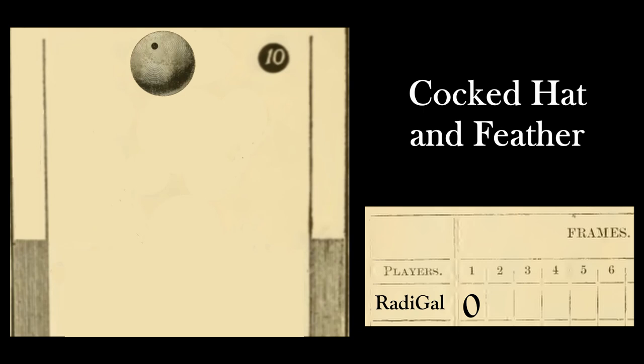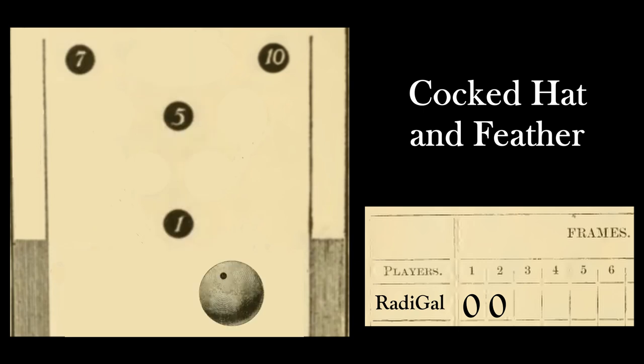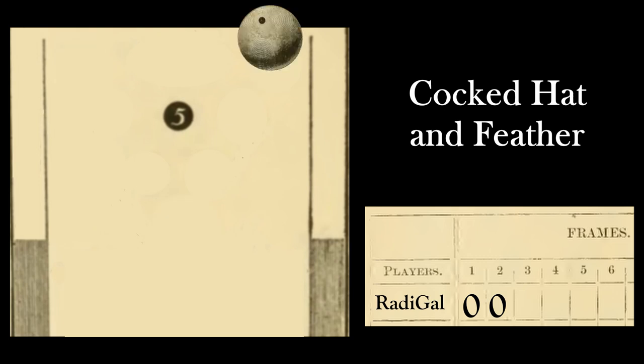I get up in the second frame and end up accidentally taking out the 5 pin. Well, that's two zeros in a row for me. Now, third frame's a charm. I get up, I take out the 1, the 7, the 10. I get 10 points for that, but I do owe my friend Frank a beer for taking out that 5 pin in the second frame.